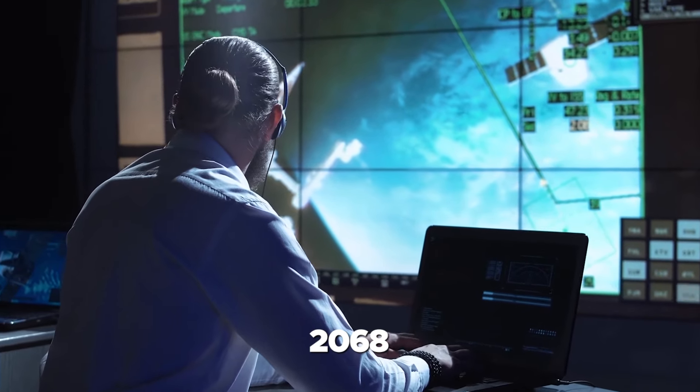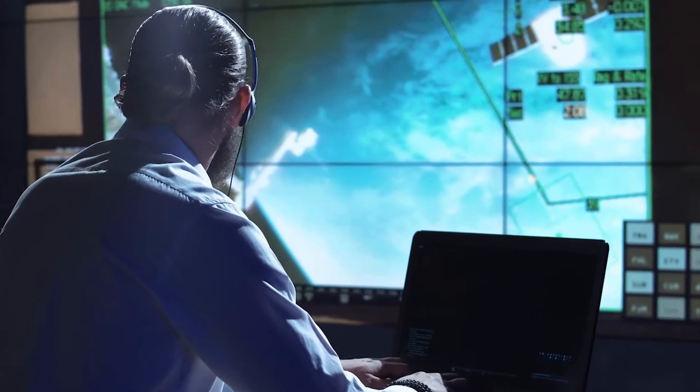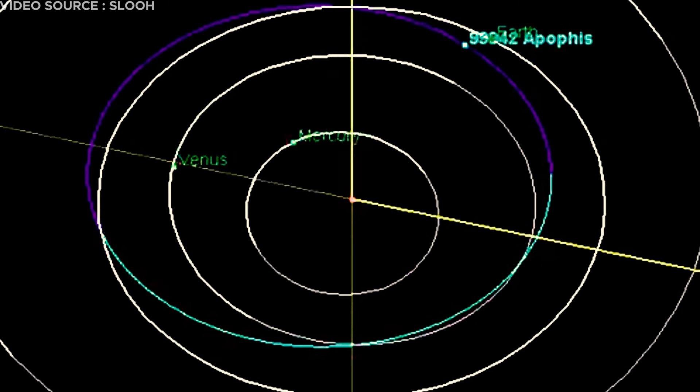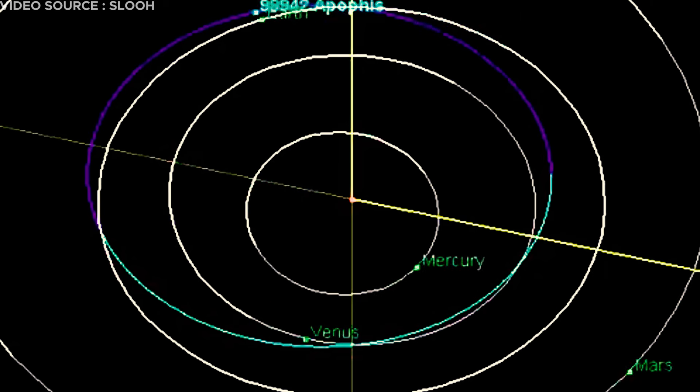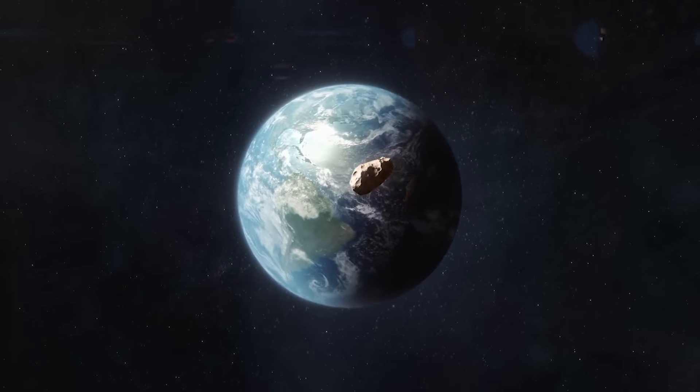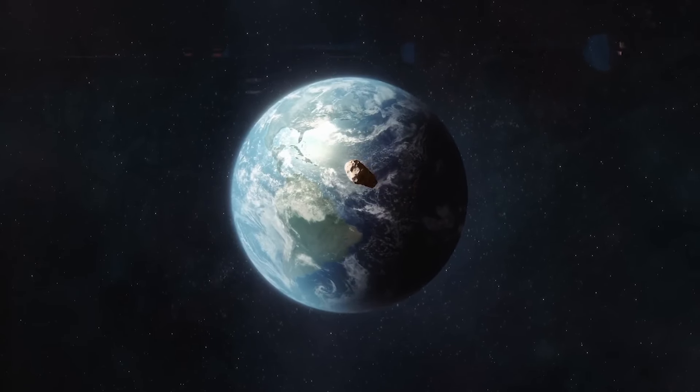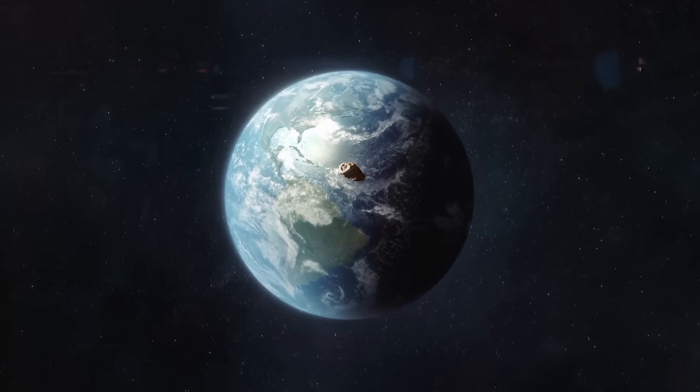Astronomers, utilizing powerful radar observations, meticulously refined the estimate of Apophis' orbit around the Sun with extreme precision. This refinement allowed them to confidently eliminate any impact risk in 2068 and beyond.